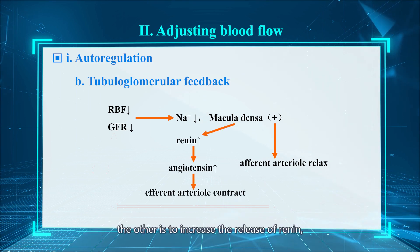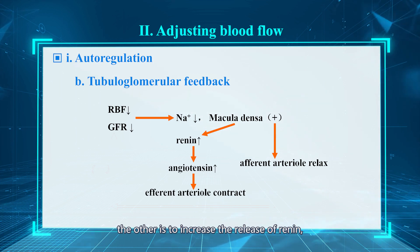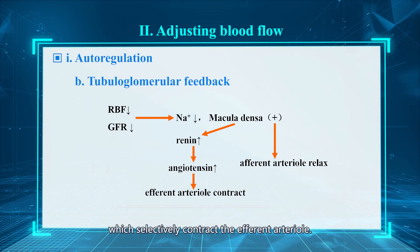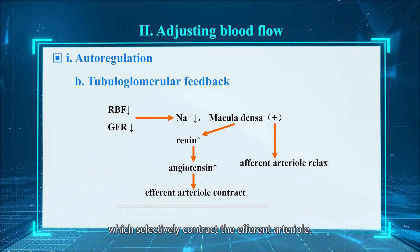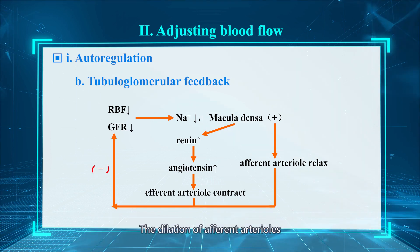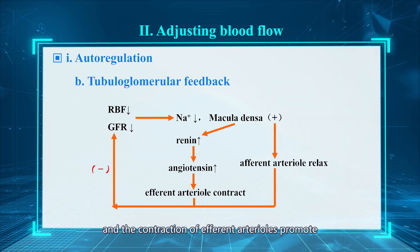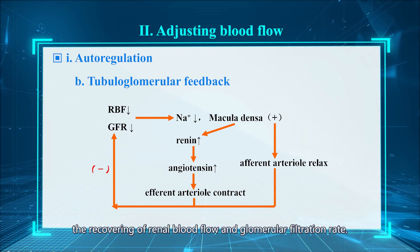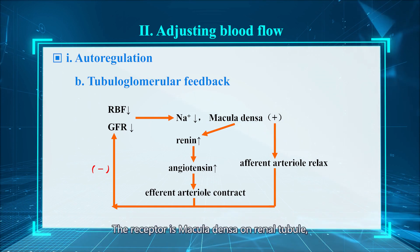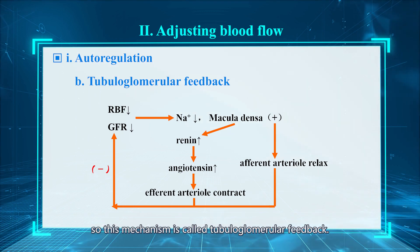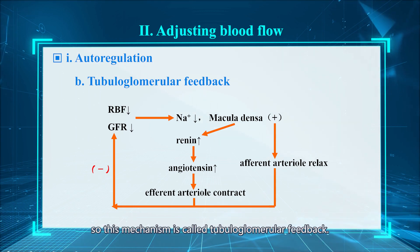The other effect is to increase the release of renin, which increases the production of angiotensin 2, selectively contracting the efferent arteriole. The dilation of the afferent arteriole and the contraction of the efferent arteriole promote the recovery of renal blood flow and the glomerular filtration rate. The receptor is the macula densa on the renal tubule, and the effector is the glomerulus — this mechanism is called tubuloglomerular feedback.